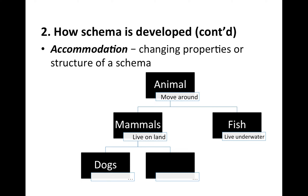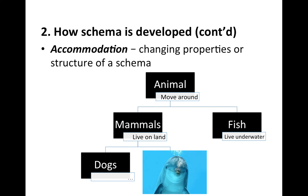On the other hand, accommodation takes place when a new learning instance is not consistent with the existing schema, so you have to change the property or structure of a schema to make the instance fit. In the example of mammals, if you see dolphins — and dolphins are mammals that live underwater — then your existing schema should be changed to make it fit, so you will have to change the characteristics of mammals as well as fish.